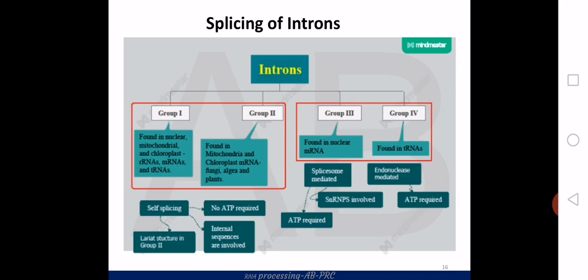The spliceosome-mediated mechanism involves a number of ribonucleoproteins called SNRPs or SNRNPs, and they require energy. The fourth group is an endonuclease-mediated one, where an endonuclease enzyme splices the introns out, and a ligase enzyme joins the exons together. In this presentation, we will see the three mechanisms — group 1, group 2, and group 3 — in detail.